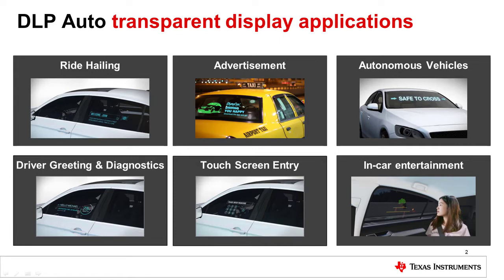Example applications include the following. In a ride-hailing application, the side window of the vehicle is used to display information identifying the taxi to the ride-haler. Advertisement campaigns can be run on the back or side windows of the vehicle. For example, a Starbucks advertisement could be run every time the vehicle is within 100 meters of a Starbucks.